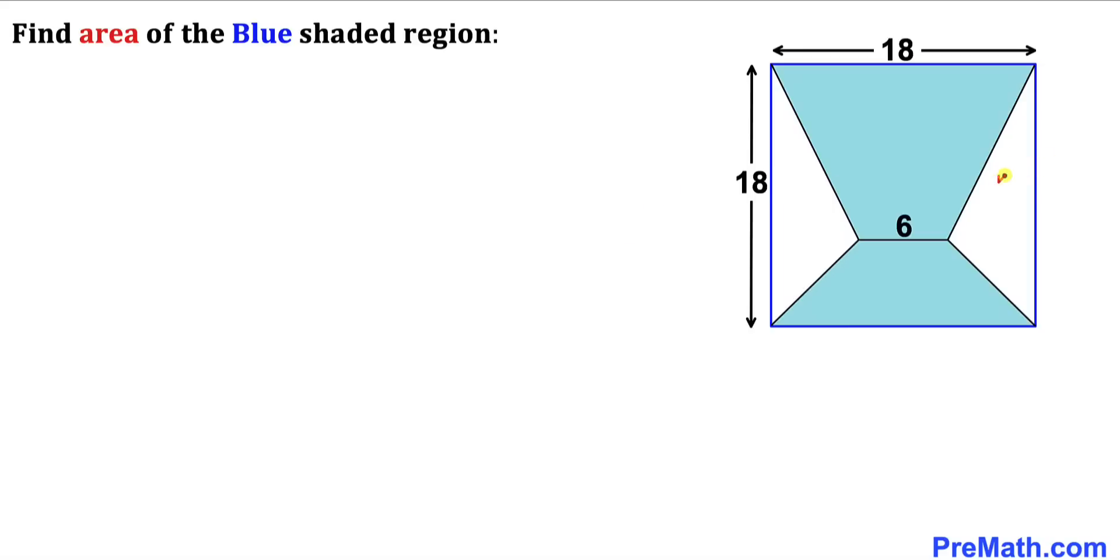This blue shaded region actually consists of two trapezoids. This is the first one and this is the second one. Let me go ahead and label this trapezoid A and this is our trapezoid B.